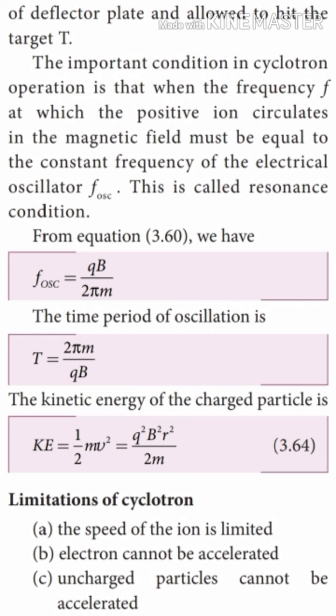Now let us see the limitations of the cyclotron. First, the speed of the ion is limited. Second, the electron cannot be accelerated, as the electron is a negatively charged particle. Third, uncharged particles cannot be accelerated — for example, neutrons are uncharged and therefore cannot be accelerated by the cyclotron.